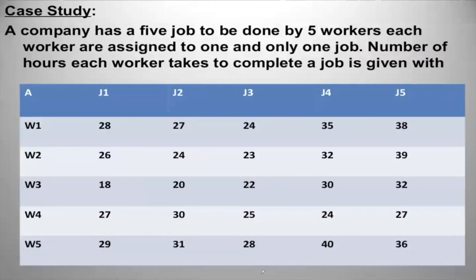To understand how the Hungarian method is applied, consider a problem: a company has five jobs to be done by five workers. Each worker is assigned to one and only one job. The number of hours each worker takes to complete a job is given in a table. For example, 28 means worker one takes 28 hours to complete job J1, and 27 hours to complete J2. Worker four takes 25 hours to complete J3 and 27 hours for J5.